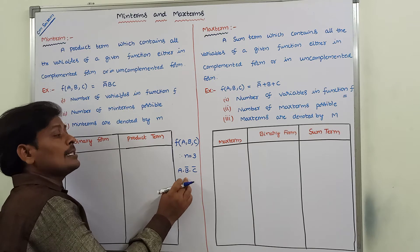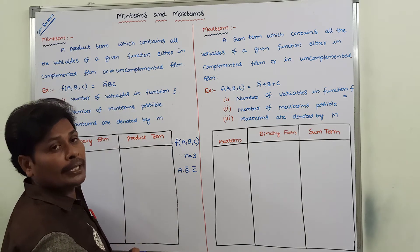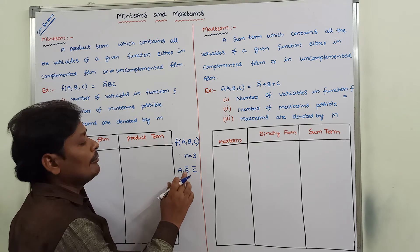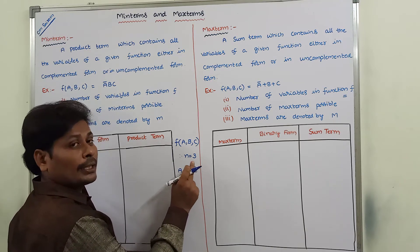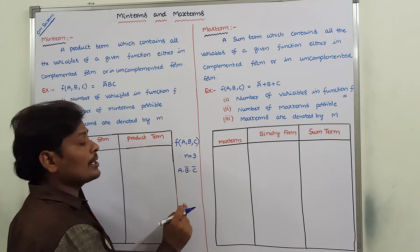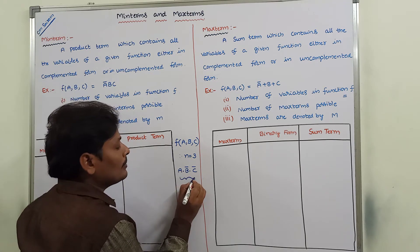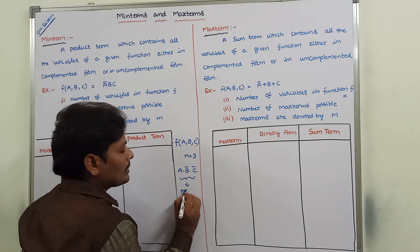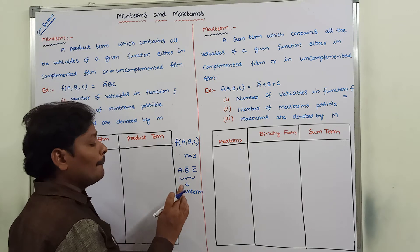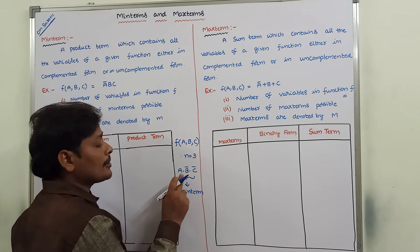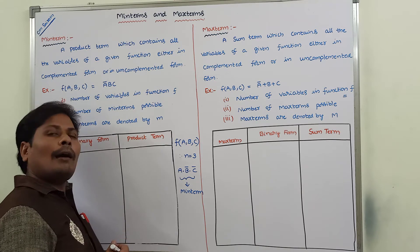This product term contains all the variables of the given function, either in complemented form or in uncomplemented form. That product term can be called as a min term. A min term is a product term which consists of all the variables of a given function, either in complemented form or in uncomplemented form.